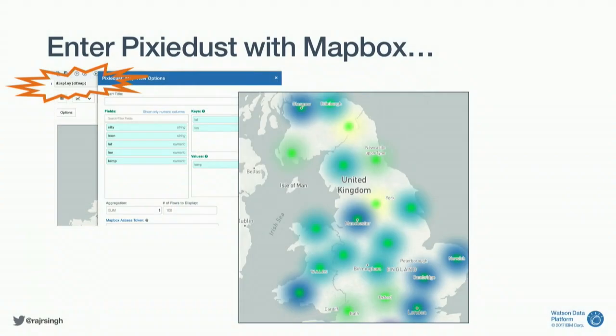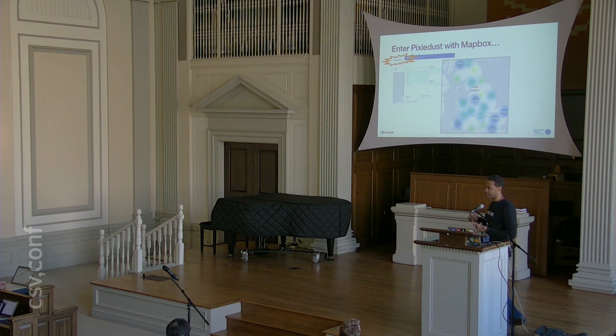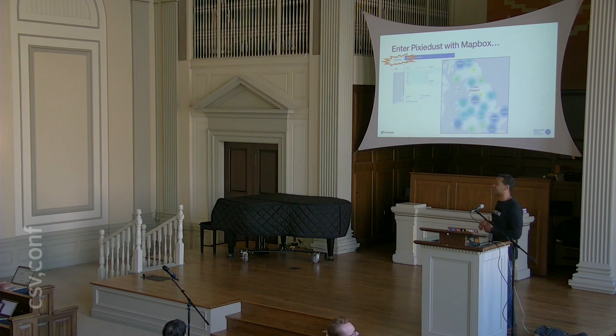With Pixie Dust, you get one command — display — and it takes your data frame, either a Spark data frame or a Pandas data frame, and gives you a GUI to work with it. You can make it a table, do bar charts, line charts, scatter plots, and histograms.